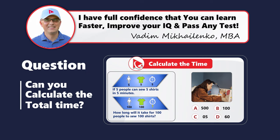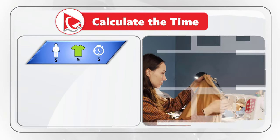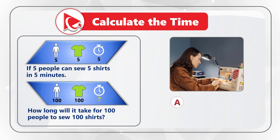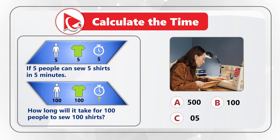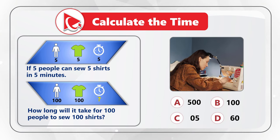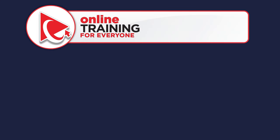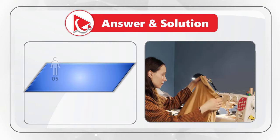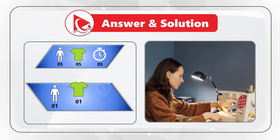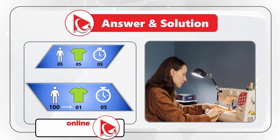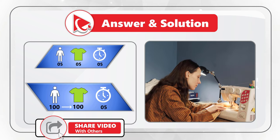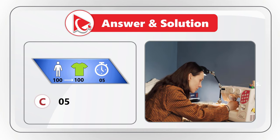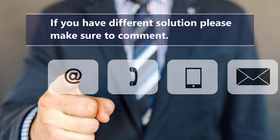If five people can sew five shirts in five minutes, how long will it take for 100 people to sew 100 shirts? Choices: A) 500 minutes, B) 100 minutes, C) five minutes, D) 60 minutes. The trick: if five people sew five shirts in five minutes, one person sews one shirt in five minutes. If 100 people work together, their combined productivity scales up proportionally, so it takes 100 people five minutes to sew 100 shirts. The correct answer is choice C, five minutes.